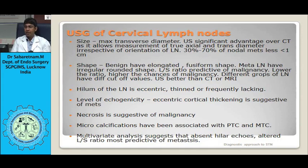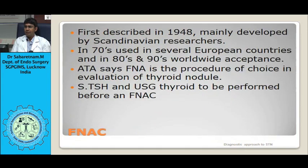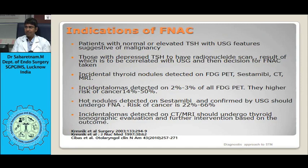Ultrasound can characterize cervical lymph nodes, measuring size by maximum transverse diameter. A taller-than-long lymph node is more in favor of malignancy. Benign nodes have an elongated fusiform shape, whereas metastatic nodes have an irregular rounded shape with thinned or absent hilum. Necrosis is suggestive of malignancy, eccentric cortical thickening is suggestive of metastasis, and microcalcification is most commonly associated with papillary thyroid carcinoma.